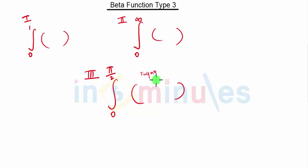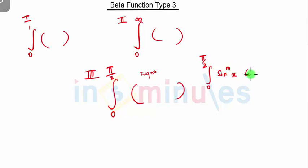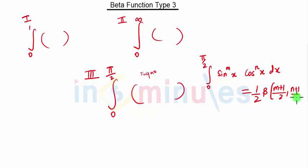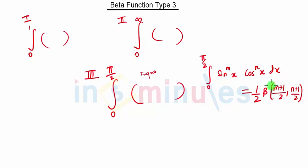In Type 3, the trigonometric functions involved are sine, cosine, and cosecant. If we have the integration from 0 to π/2 of sin^m(x) · cos^n(x) dx, then this equals (1/2) · β((m+1)/2, (n+1)/2). We need to convert our given equation into this format so that we can apply this Beta function property.